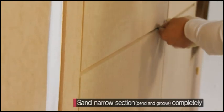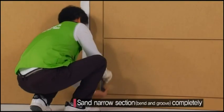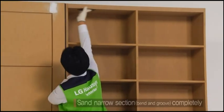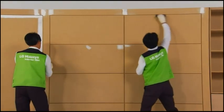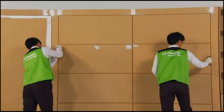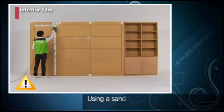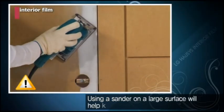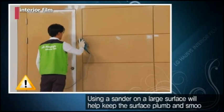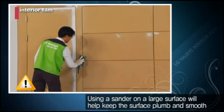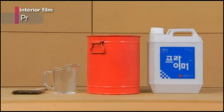Sand the surface that will be attached using sandpaper and use a brush to clean it off. The narrow sections, bends and grooves of the adhesive surface must be sanded down enough so that the film will have better adhesion. Using a sander on a large surface will help keep the surface plump and smooth.